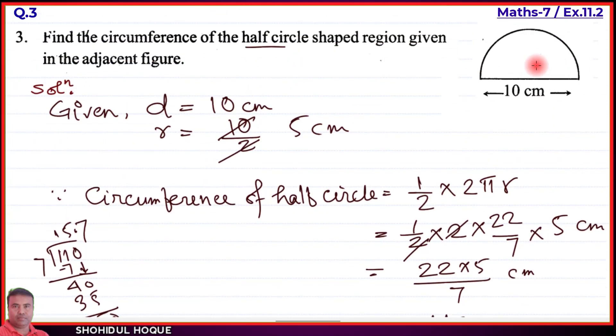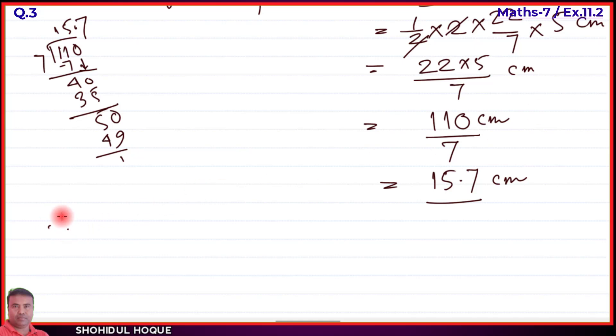Now, 15.7 centimeters is the curved half circle portion. But the complete shape's circumference includes the straight diameter side as well, which is 10 centimeters. Therefore, the total circumference of this region equals 15.7 plus 10 equals 25.7 centimeters.